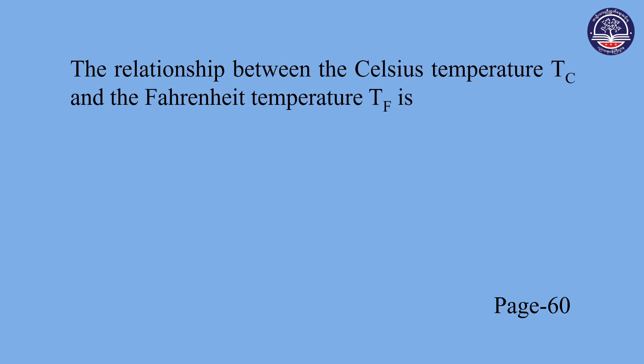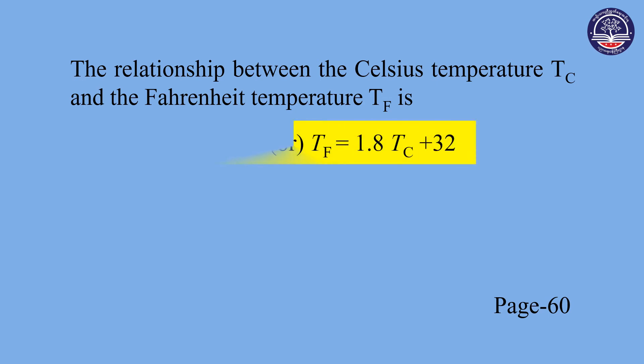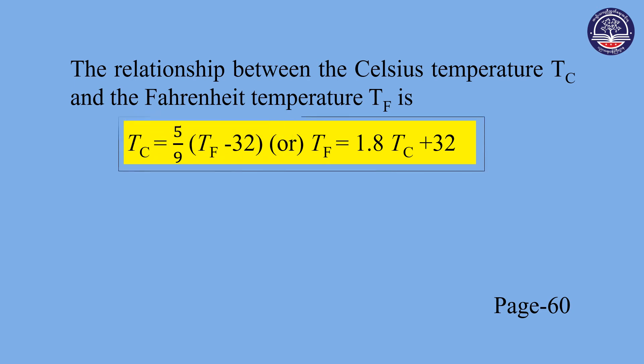If you want to convert Celsius to Fahrenheit, in the case of Celsius at 70 degrees, the Fahrenheit temperature Df is 60 degrees. The formula is DC equals 5 over 9 times the quantity Df minus 32.